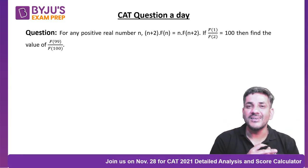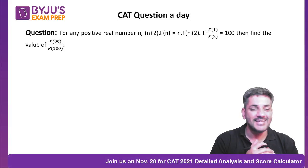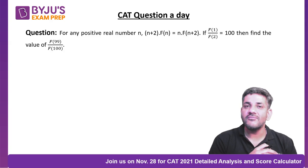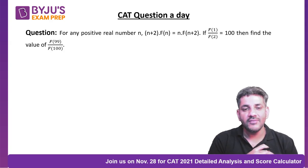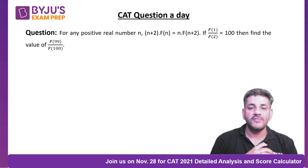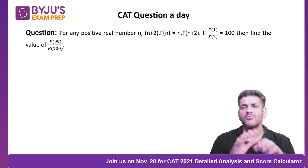This is one of those questions on your screen. For any positive real number n, (n+2)·f(n) = n·f(n+2), and if f(1)/f(2) = 100, then find the value of f(99)/f(100). The moment we see something like f of something, we tend to forget it.